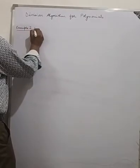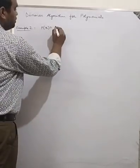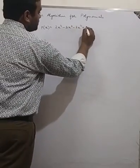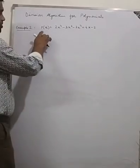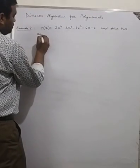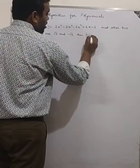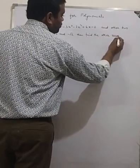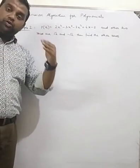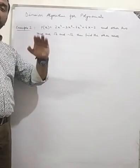It is given that P(x) = 2x⁴ − 3x³ − 3x² + 6x − 2, and two zeros are √2 and −√2. We need to find the other two zeros. In my previous lectures, I told you that the degree equals the number of zeros. Here the degree is 4, so there are 4 zeros total. Two zeros are already given, so we need to find the other two.